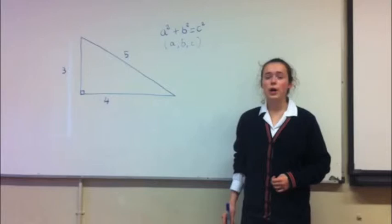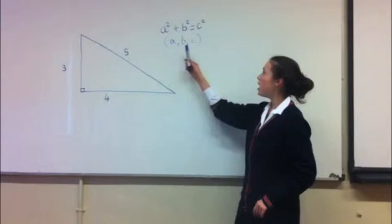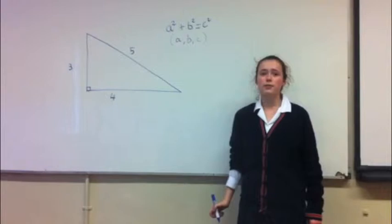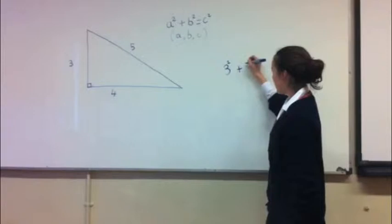A Pythagorean triple are three positive integers which fit the equation a squared plus b squared equals c squared. The number of Pythagorean triples are infinite. Let's take the example three squared plus four squared equals five squared.